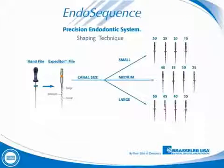The EndoSequence system utilizes procedure packs. The expediter file along with radiographs is used to help determine the procedure pack for the given case. We have small, medium, and large procedure packs for small, medium, and large canals.